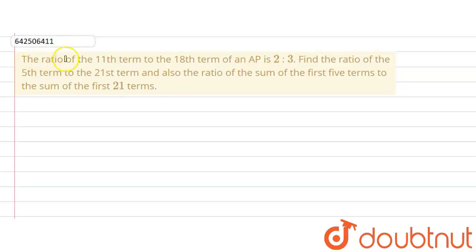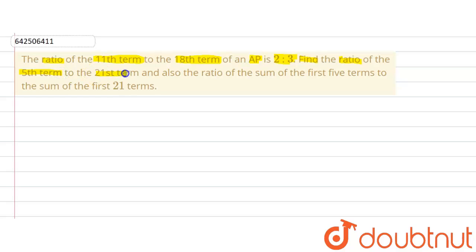The given question says that the ratio of the 11th term to the 18th term of an AP is 2 ratio 3. We are asked to find the ratio of the 5th term to the 21st term, and also the ratio of the sum of first 5 terms to the sum of first 21 terms.